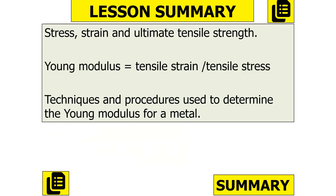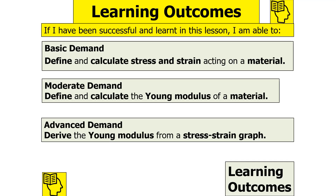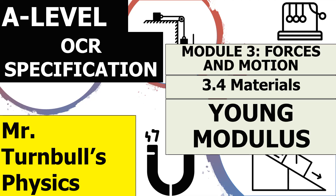To summarise today's lesson, we've looked at stress, strain, and ultimate tensile strength; the Young Modulus as stress divided by strain; and the techniques and procedures used to determine the Young Modulus for a metal. If we've been successful, we should be able to define and calculate stress and strain acting on a material, define and calculate the Young Modulus, and derive the Young Modulus from a stress-strain graph. Thank you for watching this video for the OCR A-level physics specification in the topic of Forces and Motion, subtopic of Materials, on the concept of the Young Modulus.